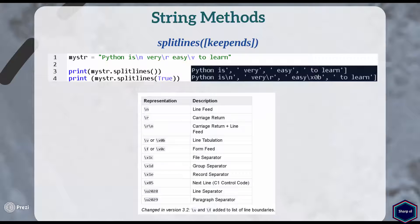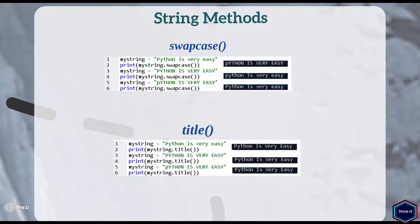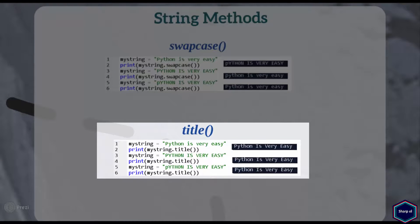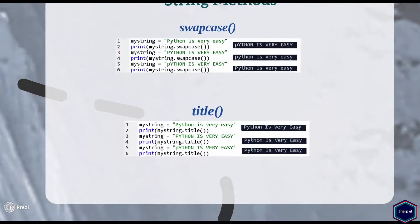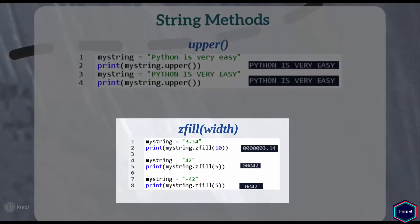If the optional argument keepends is true, special characters are also included in the resulting list. The swapcase method returns a copy of the original string where uppercase characters are converted to lowercase and lowercase characters to uppercase. The title method returns a copy of the original string where only the first character of each word is uppercased. The upper method returns a copy of the original string where all characters are in uppercase. Now let's move to our next and last method: zfill. The zfill method returns a string that is left-filled with zeros and has total length equal to the width argument. In this example I have a string of length 4 and I call zfill with width set to 10, so it returns a string left-filled with zeros with total length 10. If the length of the original string is less than or equal to the width argument, zfill returns the original string.